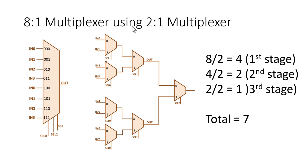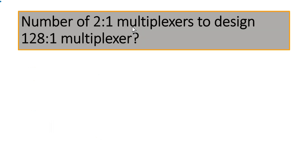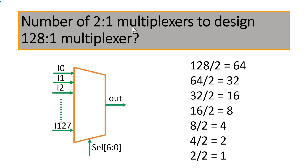Now let us look at our original question. We need to find the number of 2-to-1 multiplexers required to design a 128-to-1 multiplexer. This is the symbol of the 128-to-1 multiplexer — it has 128 input lines, 7 select lines, and 1 output signal. Dividing 128 by 2, we get 64 2-to-1 multiplexers required at the first stage.